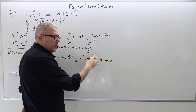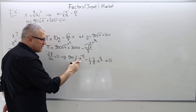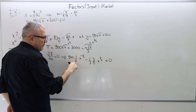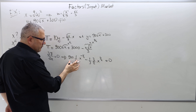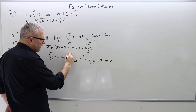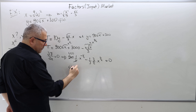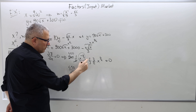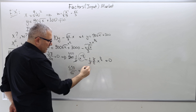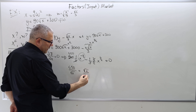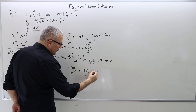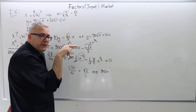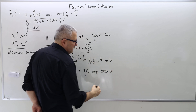Simplifying: X to the minus 1/2 is 1 over the square root of X, and X to the 1/2 is the square root of X. Taking the cost term to the right-hand side: 450 divided by the square root of X equals the square root of X divided by 2. Doing the cross product gives 900 equals X. So the optimal monopsonist labor input is X equals 900.